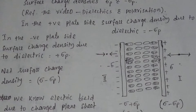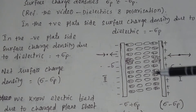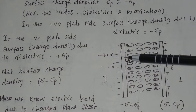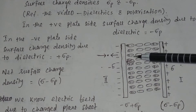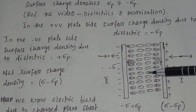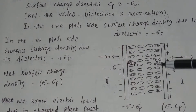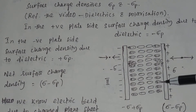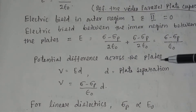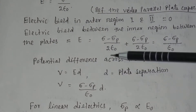When a dielectric is introduced, the free charge on the plates corresponds to sigma minus sigma p divided by epsilon 0. When you apply the electric field, the free charge on the plates remains the same, but the potential between the plates will decrease. The potential difference across the plates is V equal to the product of electric field and the plate separation d.